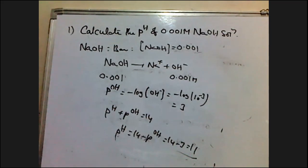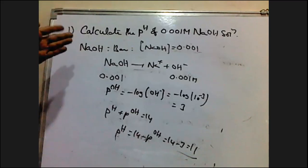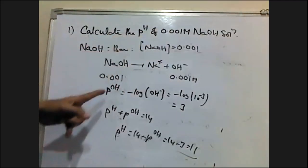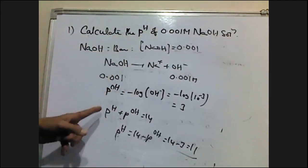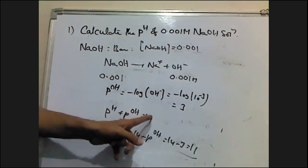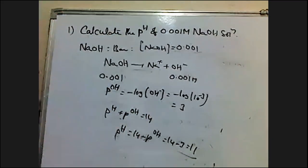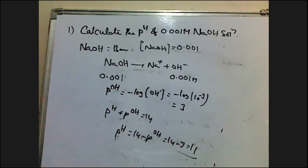For monobasic acids, polybasic acids, and pH of bases, if they ask for pH of a base, we first calculate the pOH. Then, based on the relation pH plus pOH equals 14, we calculate the pH. These are the problems which are most important for the intermediate public examination. Thank you for watching Trenath Chemistry Classes. Please like the video, share and subscribe the channel.